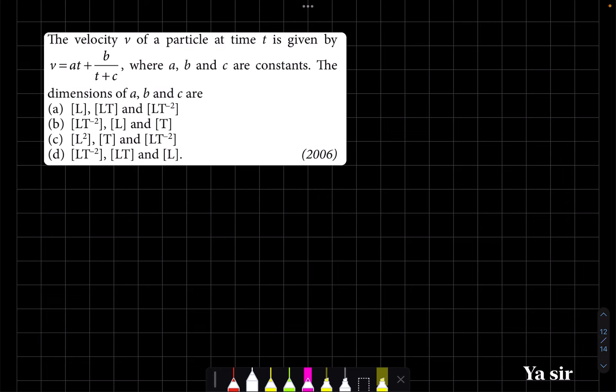So I already told you that if there is a sum, like for example a equals b plus c, then a, b, and c all of them should have same dimension. Then only we can add them. Same physical quantities only we can add or subtract.